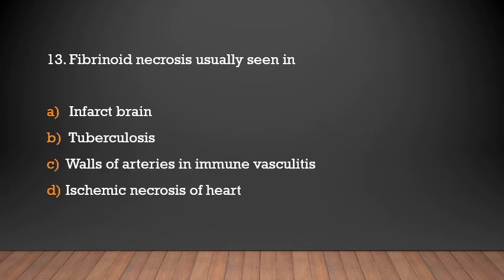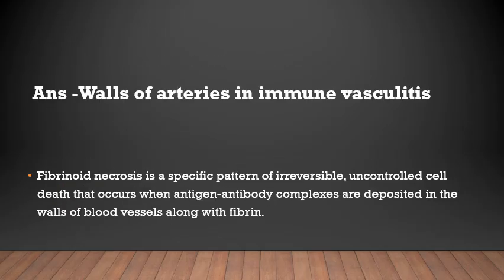Fibrinoid necrosis is usually seen in: infarct brain, tuberculosis, walls of arteries in immune vasculitis, or ischemic necrosis of heart. The answer is walls of arteries in immune vasculitis. Fibrinoid necrosis is a specific pattern of irreversible uncontrolled cell death that occurs when antigen-antibody complexes are deposited in the walls of blood vessels along with fibrin.